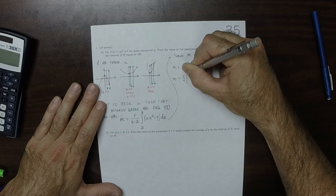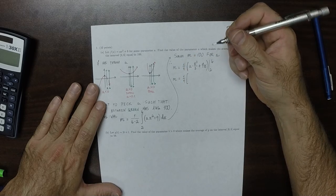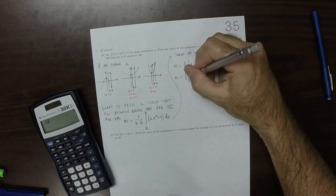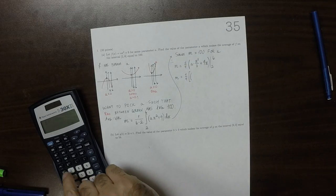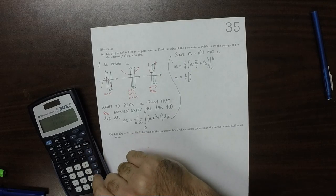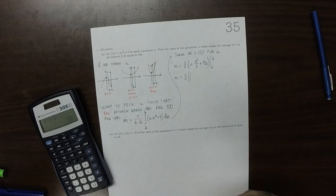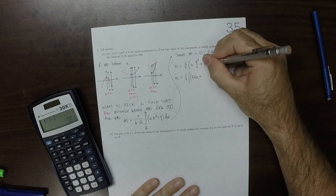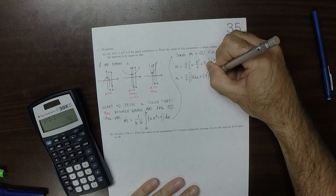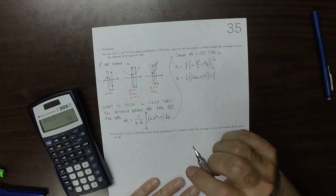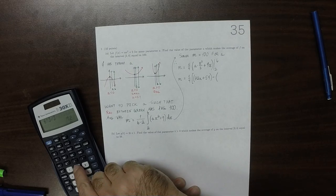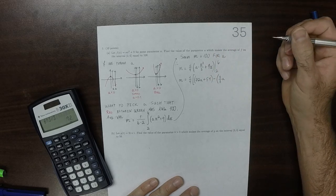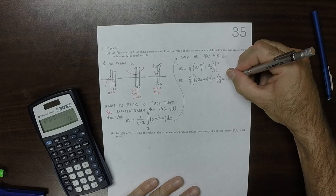m is a fourth, multiplied by, if you plug in 6, 6 cubed over 3 is 72, so that would be 72a, and then plus 9 times 6 is 54, minus, if you plug in 2, that would be 8 over 3, so 8 thirds a, and then plus 18.